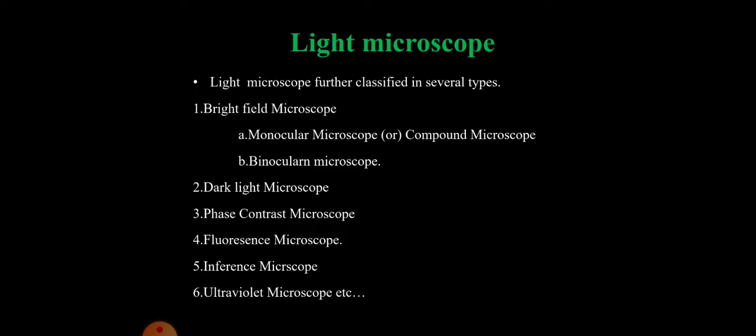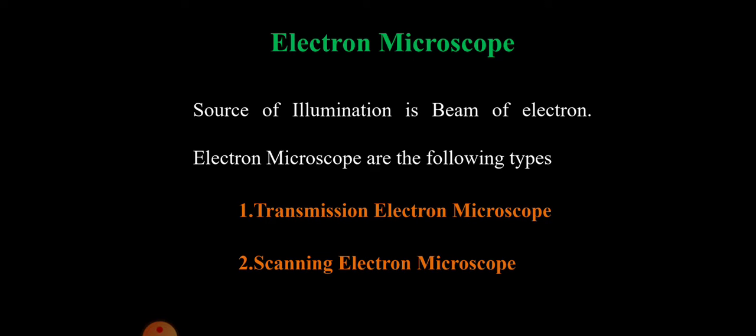One is monocular microscope, also called a compound microscope; second is binocular microscope. Electron microscope: the source of illumination in electron microscope is a beam of electrons. The electron microscope has two types: one is transmission electron microscope, you can simply call it TEM; second one is scanning electron microscope, you can call it SEM.